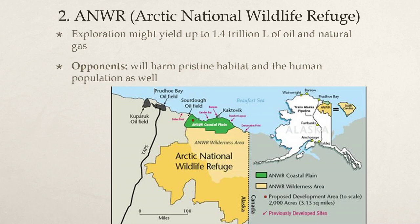The Arctic National Wildlife Refuge is another case study where they're looking at extracting oil in northern Alaska near Canada — about the size of South Carolina. Opponents say it will harm the pristine habitat and the human population. Proponents say exploration could bring in 1.4 trillion liters of oil and natural gas. There's a national refuge where a coastal part exists immediately next to an oil field, and they're looking at exploring more of this area for oil.